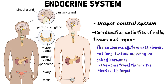The endocrine glands are small and widely scattered, and they include the pituitary gland, the pineal gland, the hypothalamus, the thyroid, the parathyroid, the adrenal glands, the pancreas, and the gonads, which include the testes and the ovaries.